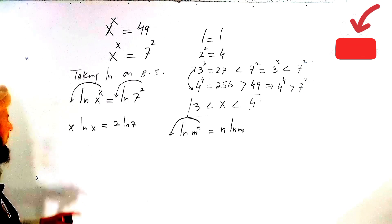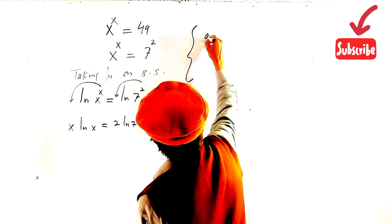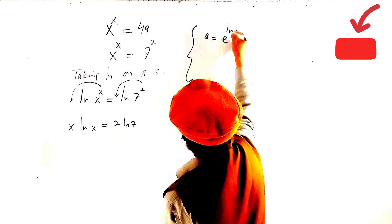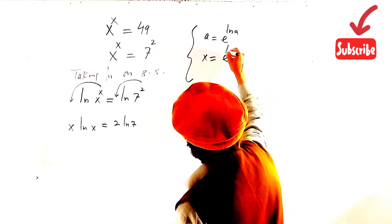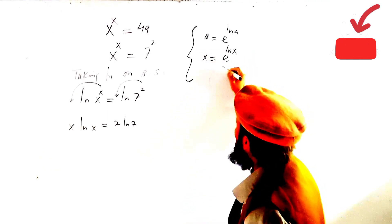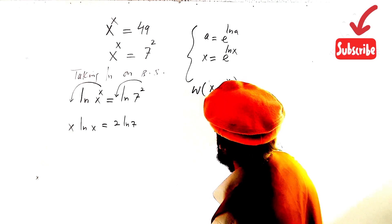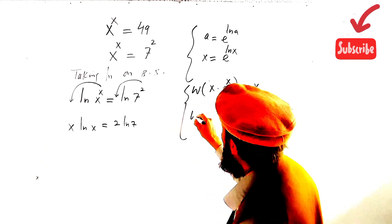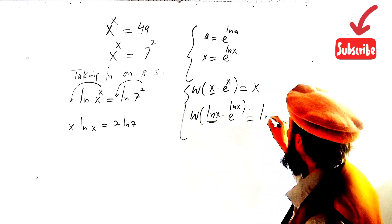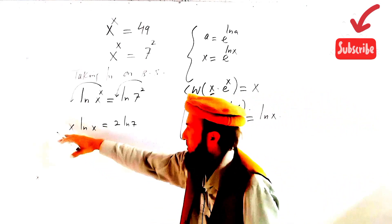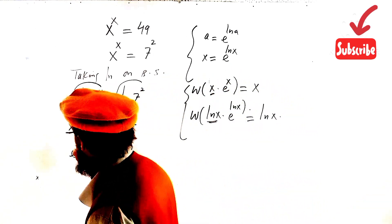Now we use some formulas. Since E·log(E) cancels, we get A. Similarly for x, we write E^(log x). Using the W function: if we write x·E^x, the result is x. And f(log x) = E^(log x) gives log x. So we rewrite x as E^(log x).